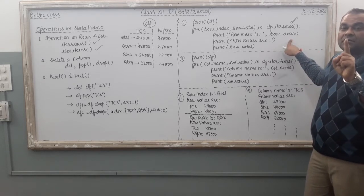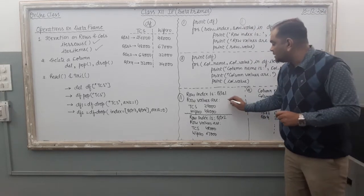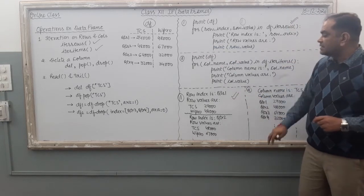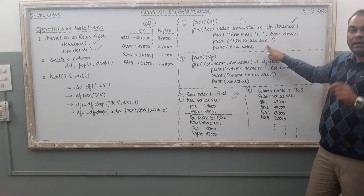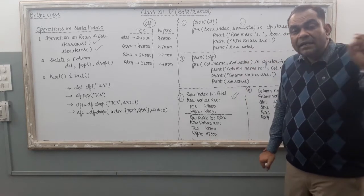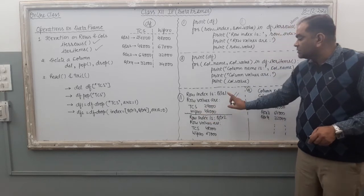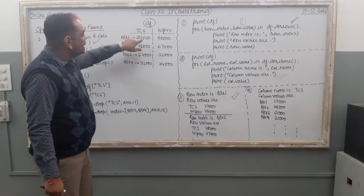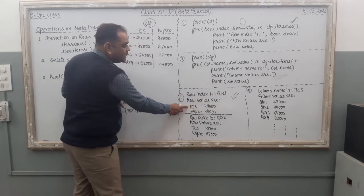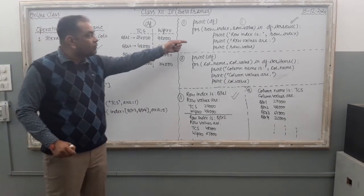When you execute this loop for the first time, the output is: row index is Quarter 1. Row values are TCS: 24,000 and Wipro: 48,000. Row value is an attribute related to the DataFrame. If you want to see values in the row, you can use the row value attribute. So the output shows Quarter 1, TCS 24,000, Wipro 48,000 — that is the output when the for loop executes the first time.